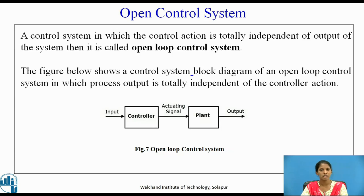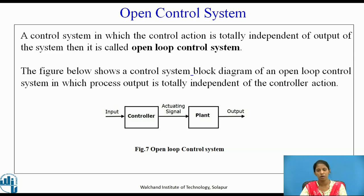The next type is the open loop control system. A control system in which the control action is totally independent of the output is known as an open loop control system. Figure 7 shows a block diagram for an open loop control system, where input is given to the controller, which provides an actuating signal to the plant and gives the output. There is no relation between input and output.